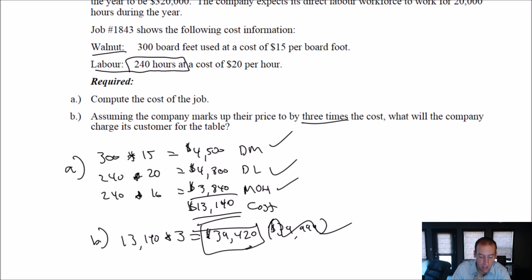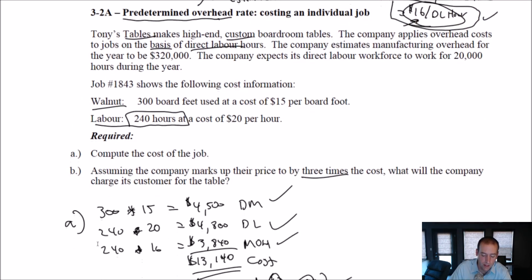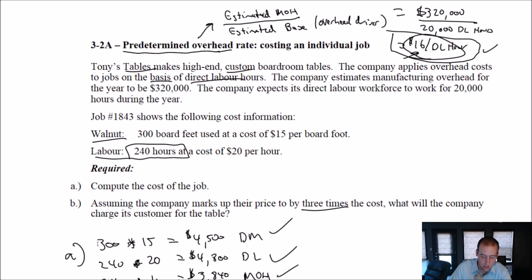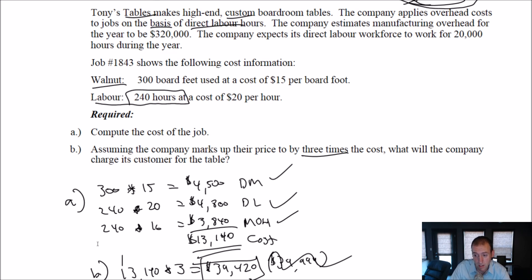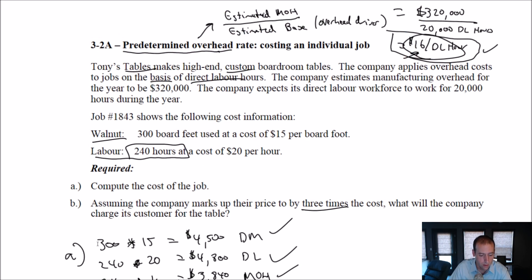So there we have it. I hope this illustrated using an overhead rate. And just — I can't stress enough — this is an estimate. This overhead rate is an estimate. We're estimating the amount of overhead cost in that job. It's useful to determine the price, and it's useful to determine whether the job was profitable or not, or just how profitable a job may or may not have been. All right, that's it for this one. Stay tuned for our next video.